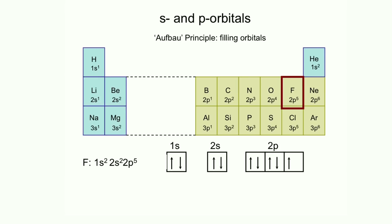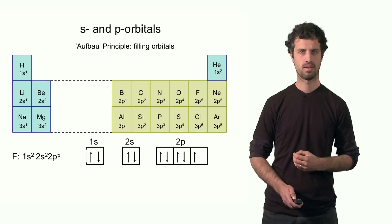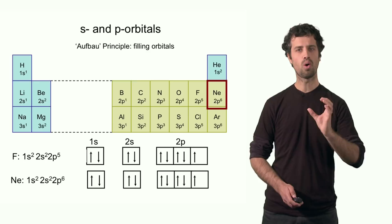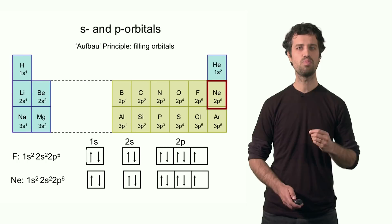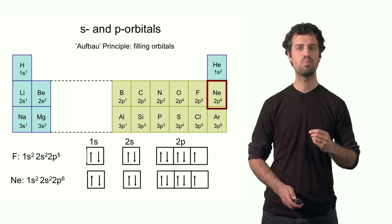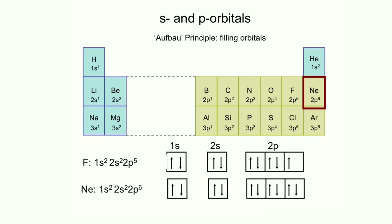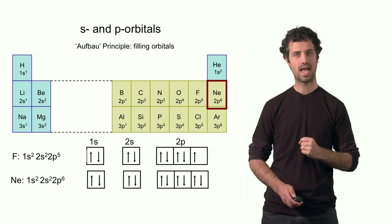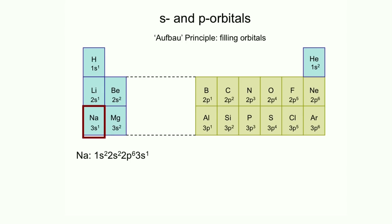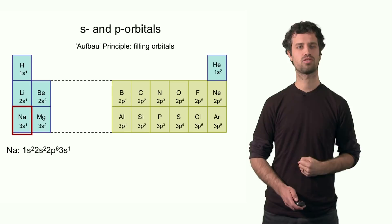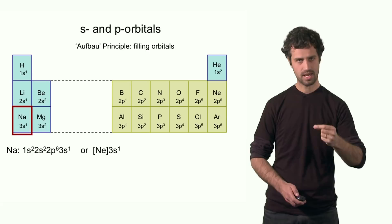Neon has a closed shell arrangement because all electrons in the n = 2 shell are now filled. The electron configuration of neon is 1s² 2s² 2p⁶. Since all 2p orbitals are filled, the next element must have its last electron in the n = 3 level. That element is sodium, whose last electron occupies a 3s orbital. The electron configuration of sodium can be written as [Ne] 3s¹.